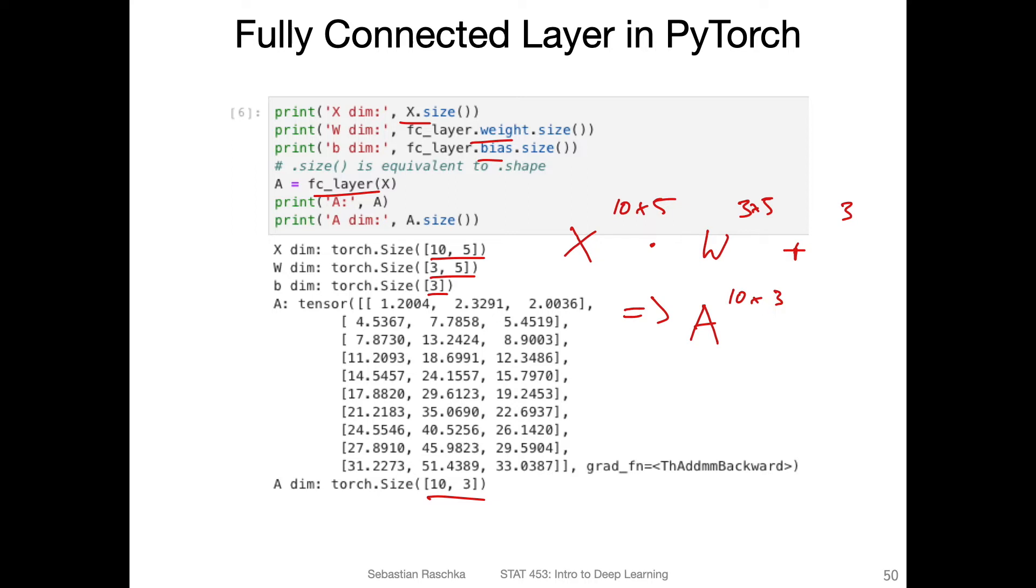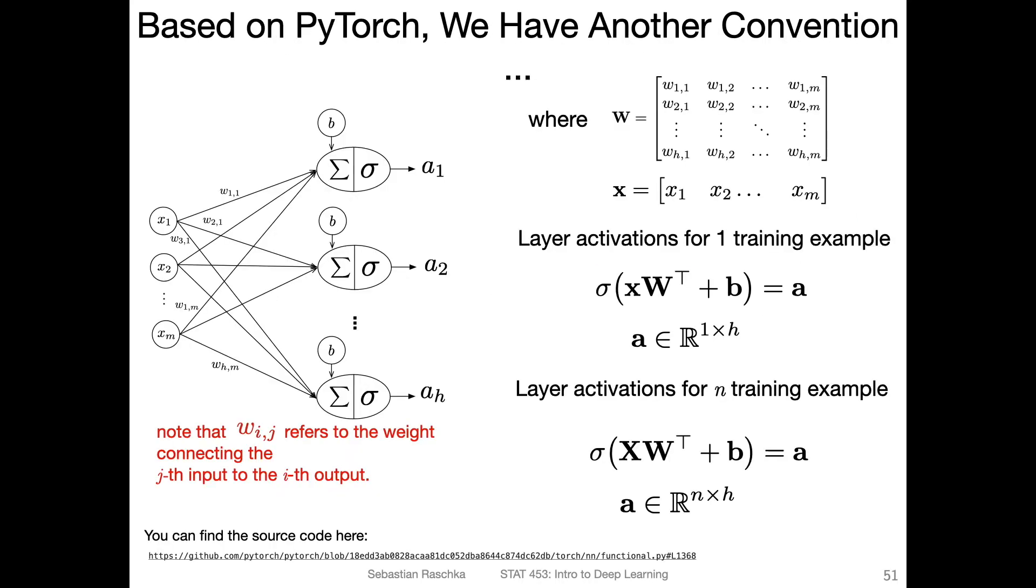How does that work? What is going on here? You can already probably see there must be some transpose here for the w, so that the five goes in front and the three goes here. Then maybe it's compatible with this x. That's what's going on. I have a summary of that.